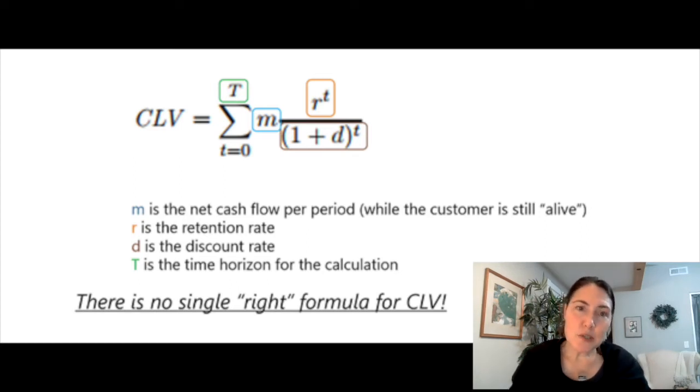R to the T assumes that revenue is booked at the beginning of the period, so T equals zero. You can adjust that, of course, to whenever your revenue is booked. D stands for discount rate. This is the time value of money. It would not be accurate to project customer lifetime value without discounting for cash because dollars received today are worth more than those received tomorrow. It's a good idea to align with your CFO for the proper discount rate for your company.